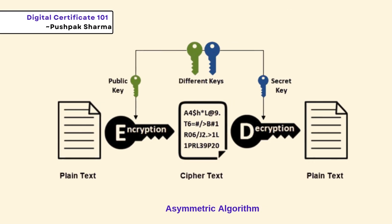Now let's talk about asymmetric encryption — it's like the dynamic duo of cryptography. This time we're using two keys: a public key and a private key. If you encrypt something with the public key, only the private key can decrypt it. So while you can lock it up with the public key, you need the private key to unlock it. It's like sending a secret message where only the right person has the key to read it.